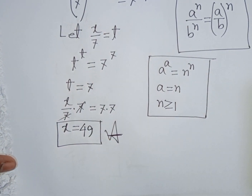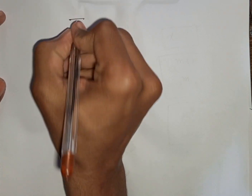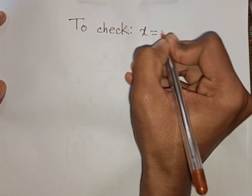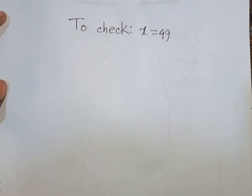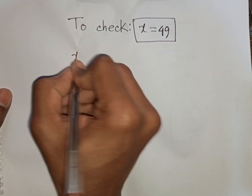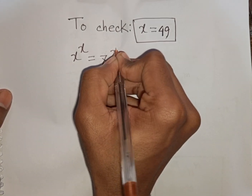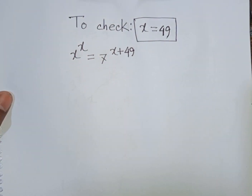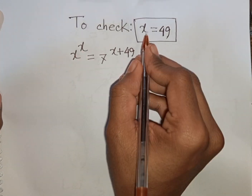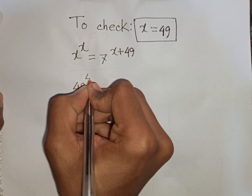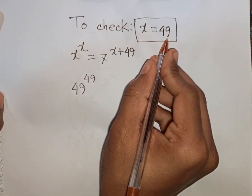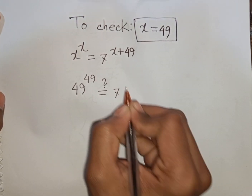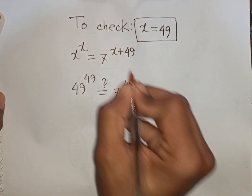So x = 49. This is the value of x and our final answer. Now to verify: for x = 49, we check the original equation x^x = 7^(x+49). The left side is 49^49, and the right side is 7^(49+49).